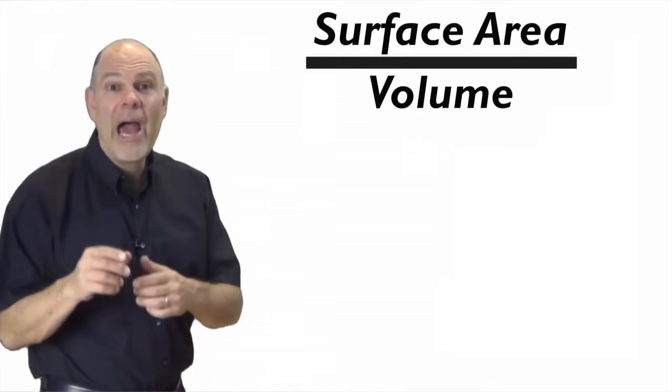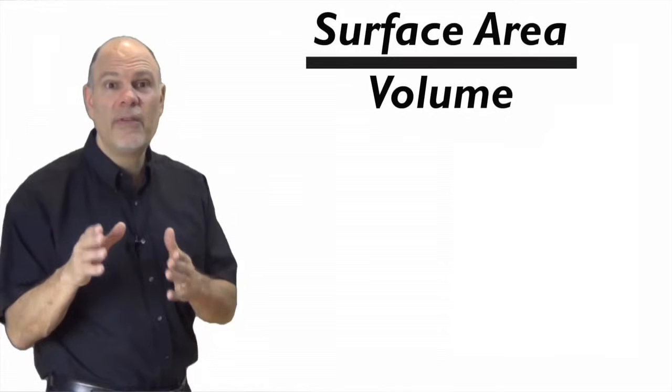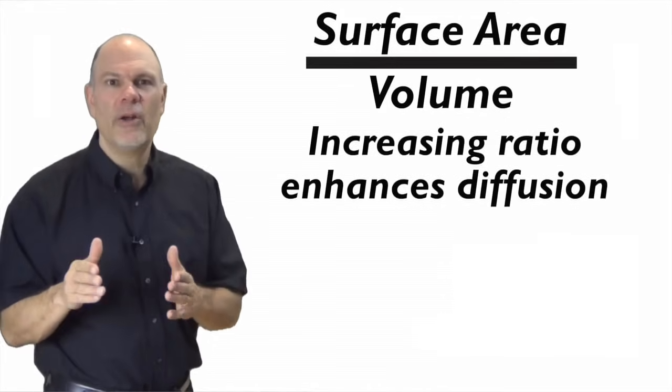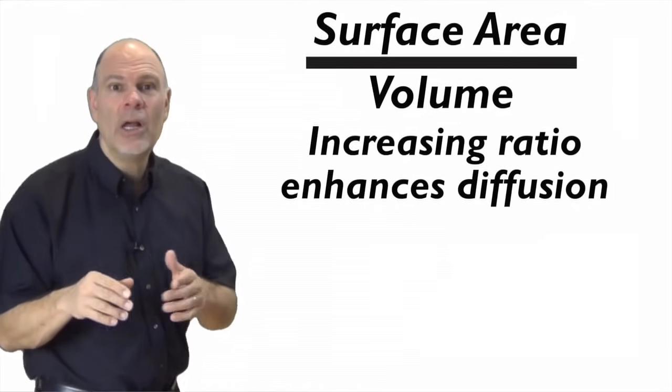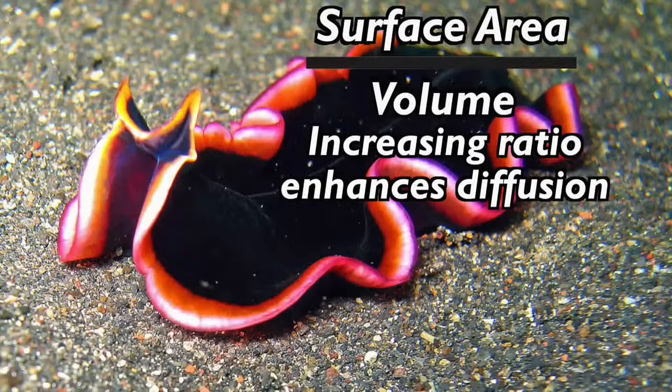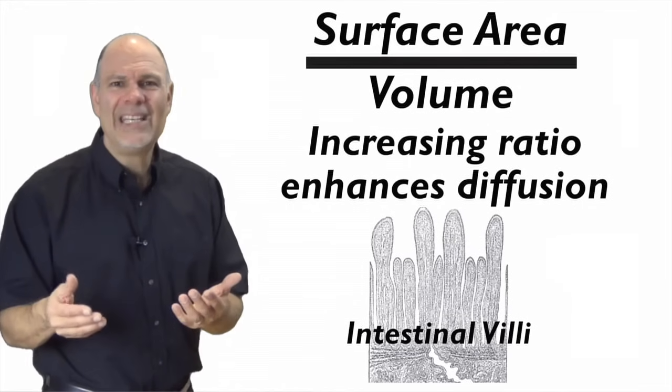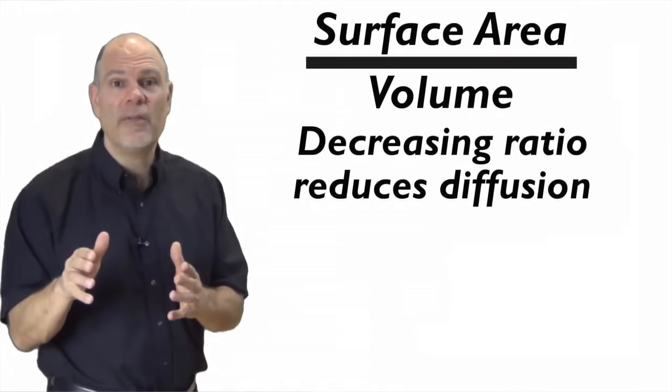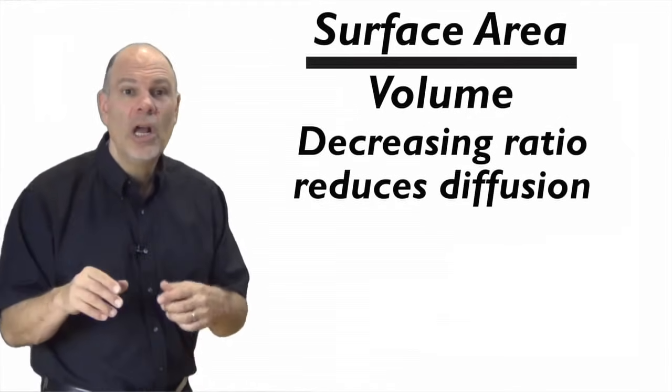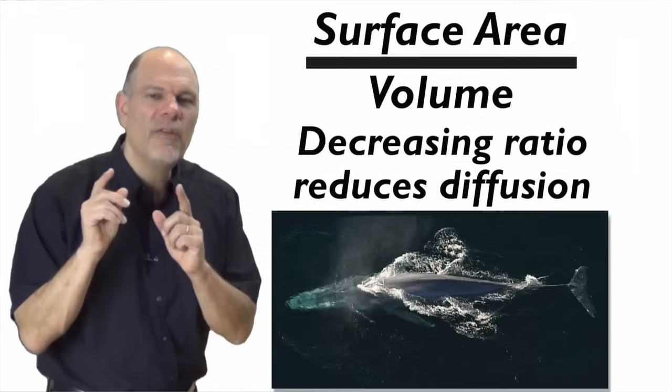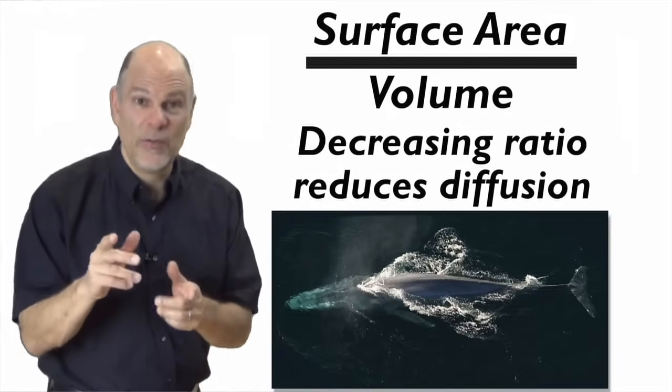We've seen in this video how important surface area to volume ratios are. How increasing the ratio of surface area to volume makes diffusion easier, leading to adaptations like big ears in elephants or the flat shape of flatworms and wavy tissues. We've also seen how decreasing the ratio of surface area to volume makes diffusion harder, leading to adaptations like folded arms against our body or evolving to great size if you're a whale.